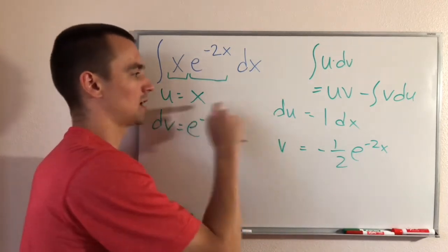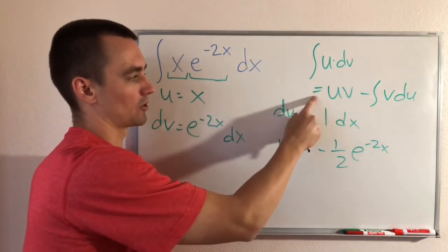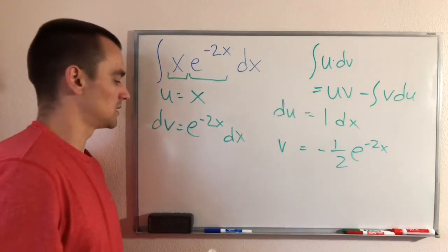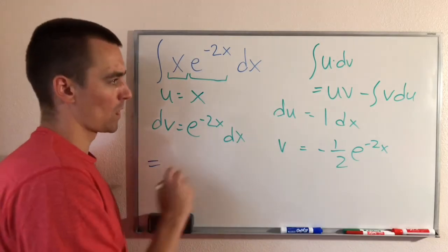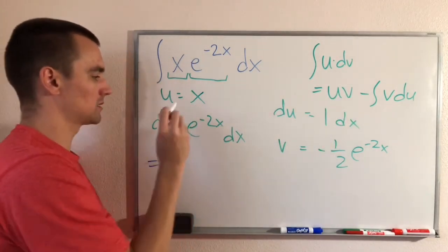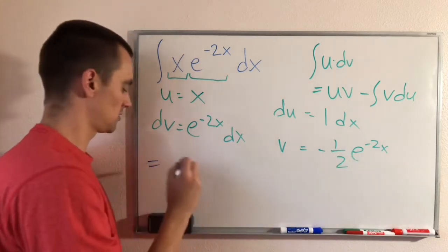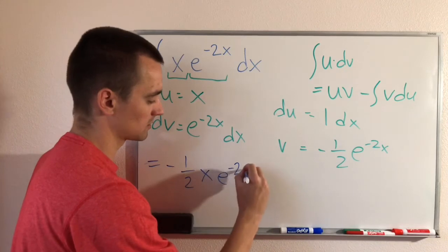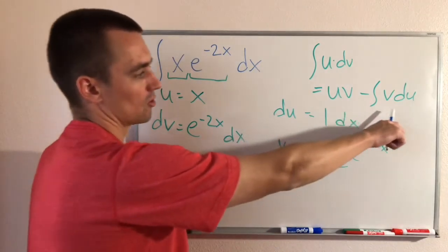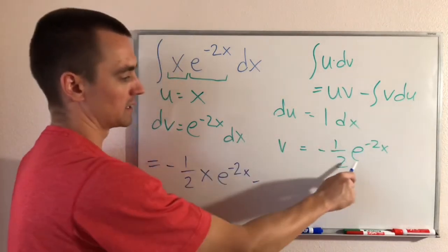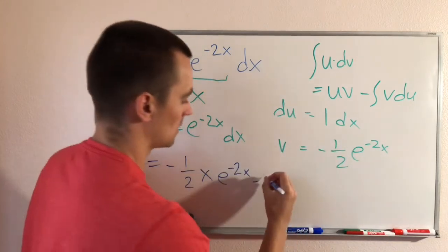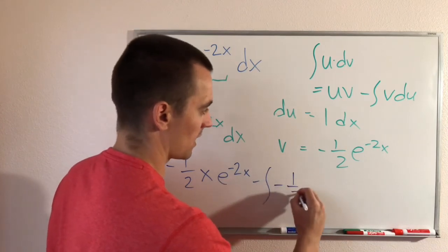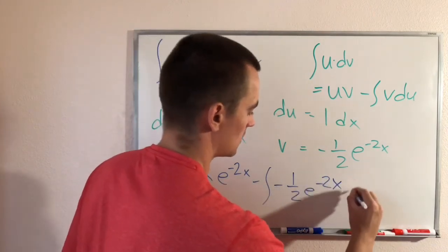Now we can take these four pieces and plug them into our integration by parts formula. We know that this integral is equivalent to u times v, which is going to be negative 1 half x e to the negative 2x, minus the integral of v times du — so minus negative 1 half e to the negative 2x dx.